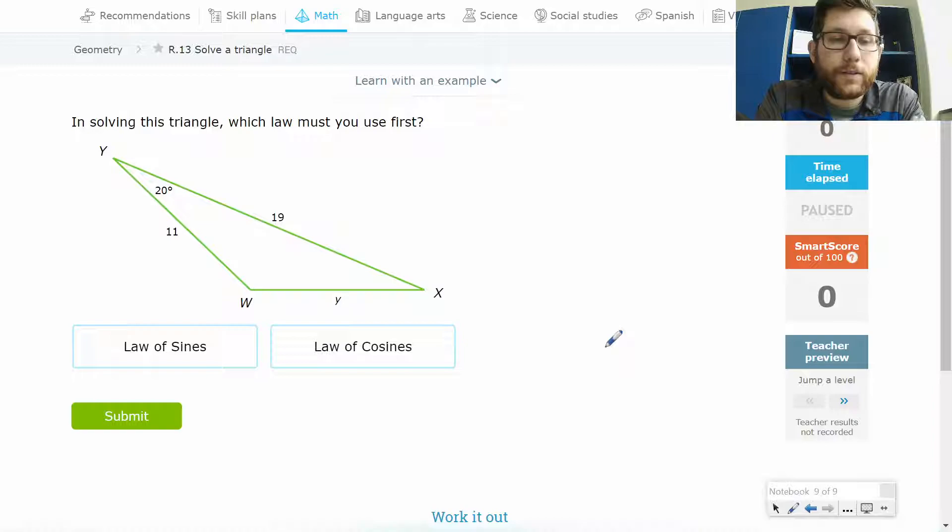This is going to ask you to solve for triangles. Sometimes you'll have to use Law of Sines, sometimes you'll have to use Law of Cosines, but it's up to you to determine which one that is.